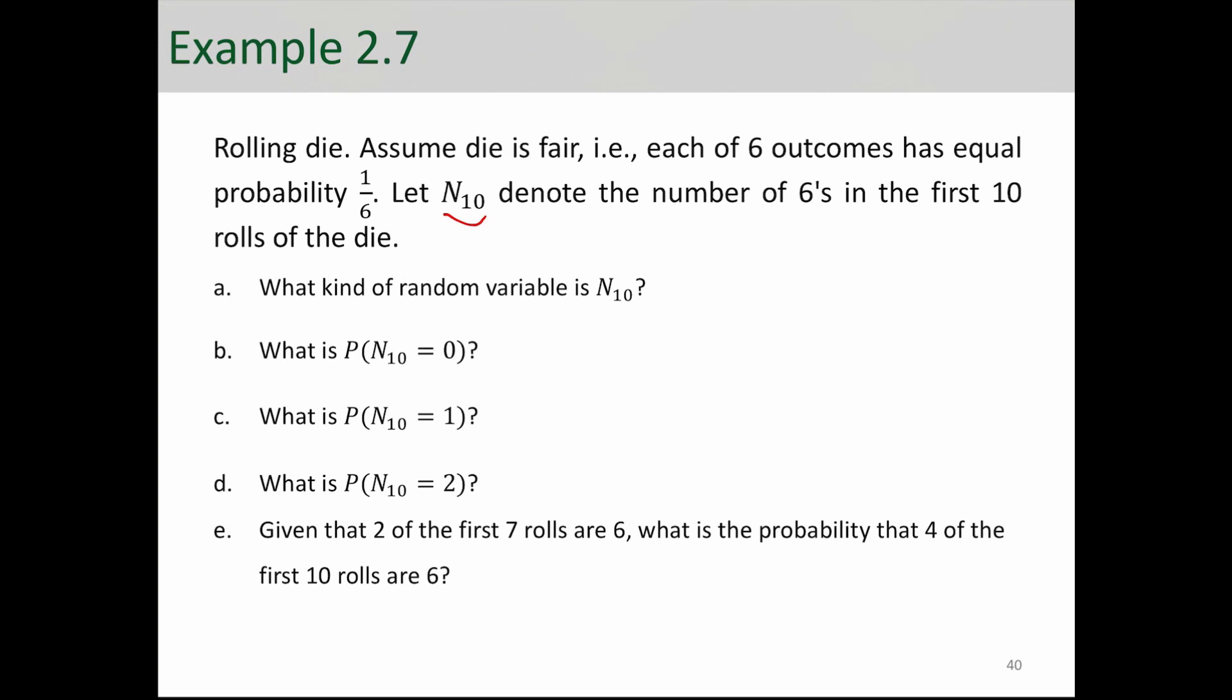What kind of random variable is n10? Well, because it represents the number of successes in 10 trials, it is a binomial random variable. So the answer is n10 follows binomial distribution with n equals 10 and p equals 1 over 6.